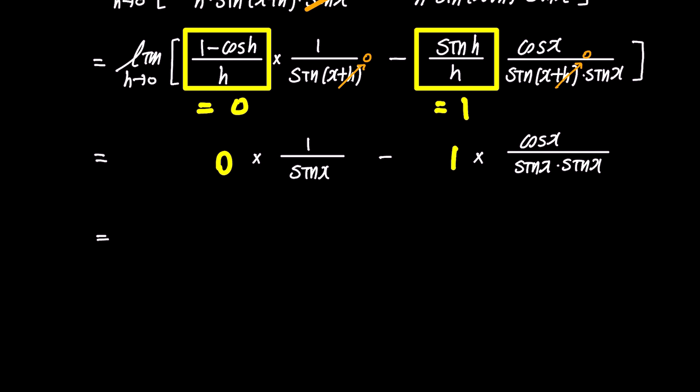Eventually, the first fraction disappears, leaving only the second fraction, which can be written separately as negative 1 over sin x times cos x over sin x.